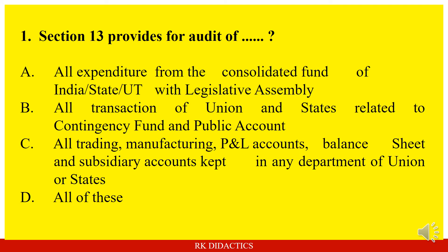Question: Section 13 provides for audit of — Option A: All expenditure from the Consolidated Fund of India, State or Union Territory with legislative assembly. Option B: All transactions of union and states related to Consolidated Fund and Public Account. Option C: All trading, manufacturing, profit and loss accounts, balance sheet and subsidiary accounts kept in any department of union or state. Option D: All of these. Answer: All of these.